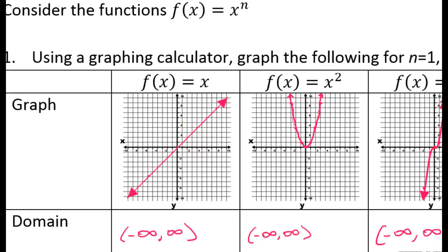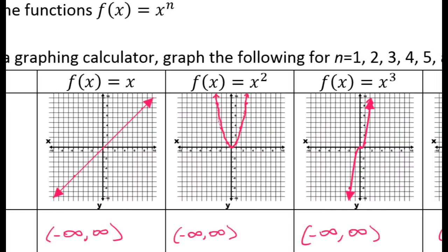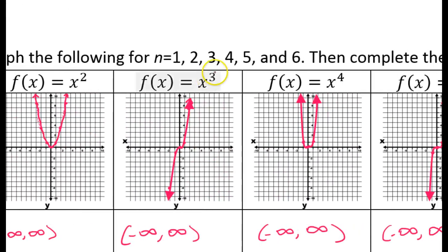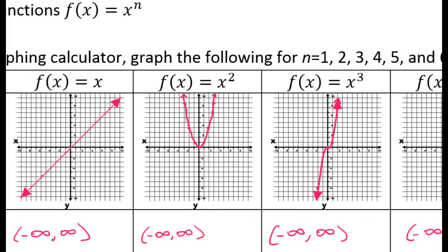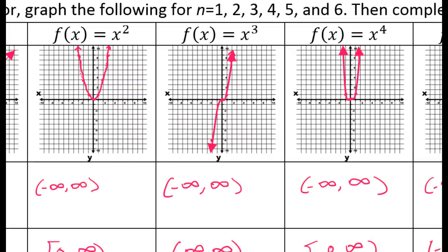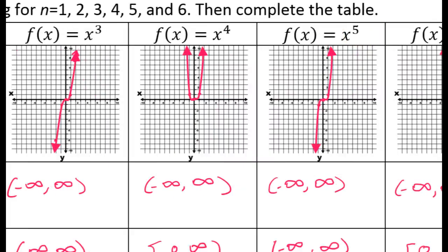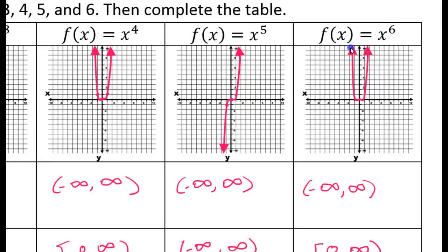Let's skip ahead because we know all of the odd degree functions behave in a similar way. For every odd degree function, on the left it's falling and on the right it's rising — so all odd degree functions share that same end behavior. Looking at x squared, on the left it rises and on the right it rises. And that is the same for all even degree functions. Looking at x to the sixth power — on the left it rises, on the right it rises. It's rising on both ends.